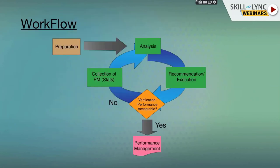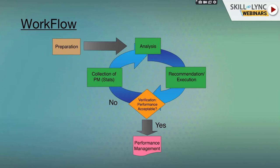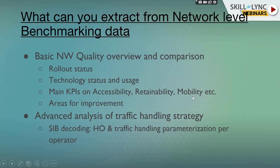The network-based benchmarking is different from drive test-based benchmarking — you need a separate set of tools and you access the network's OSS data rather than going into the field. Network-based benchmarking data includes rollout statistics (how many sites have been deployed), technologies in place (3G, 4G), number of carriers, frequency range, bandwidth allocated, and major KPIs — accessibility (setup success rate), retainability (drop call rate), and mobility (handover success rate).